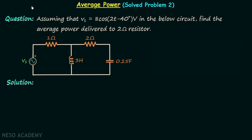In the previous lecture we solved problem number 1 on the calculation of average power, and now we are going to solve problem number 2. According to the problem, we are required to assume that Vs, the supply voltage, is equal to 8 cos(2t − 40°) volts, and we need to find the average power delivered to the 2-ohm resistor.